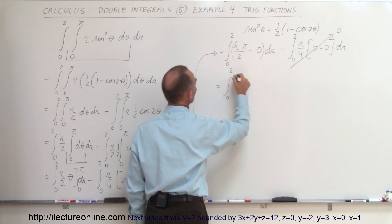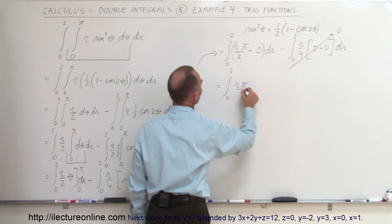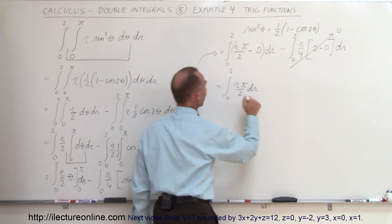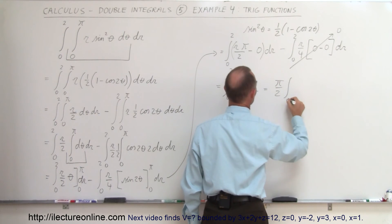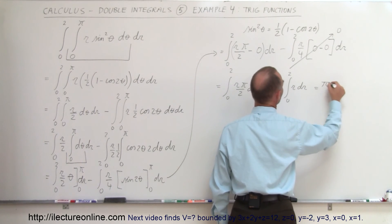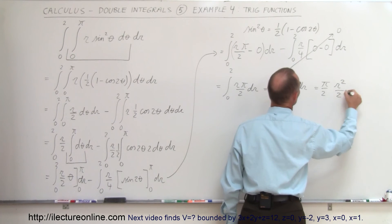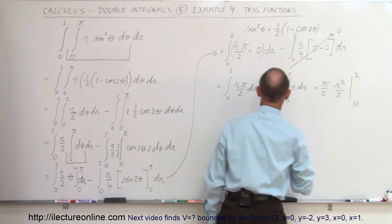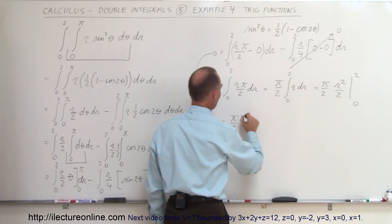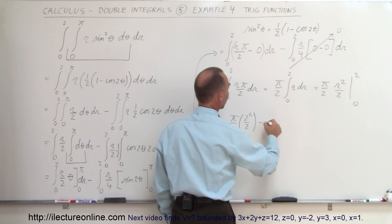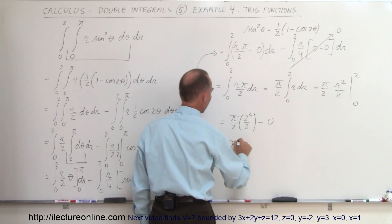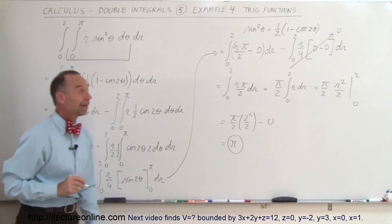This equals the integral from 0 to 2 of r pi divided by 2 dr. Writing it more cleanly: pi divided by 2 times the integral from 0 to 2 of r dr. This equals pi divided by 2 times r squared over 2, evaluated from 0 to 2, which gives pi divided by 2 times 4 divided by 2, which simplifies to pi divided by 2 times 2 equals pi. That's the answer.